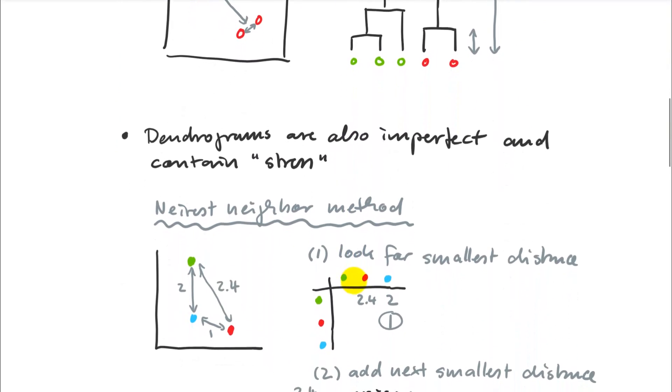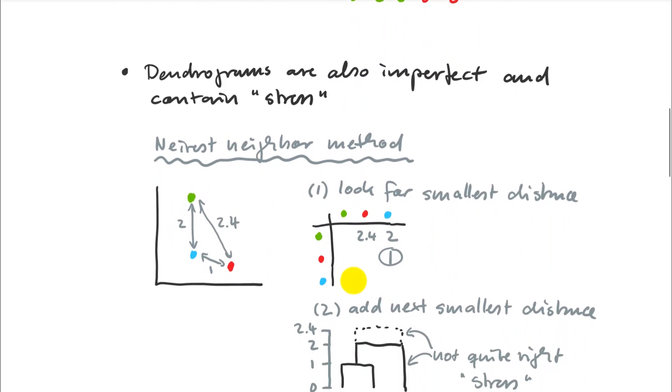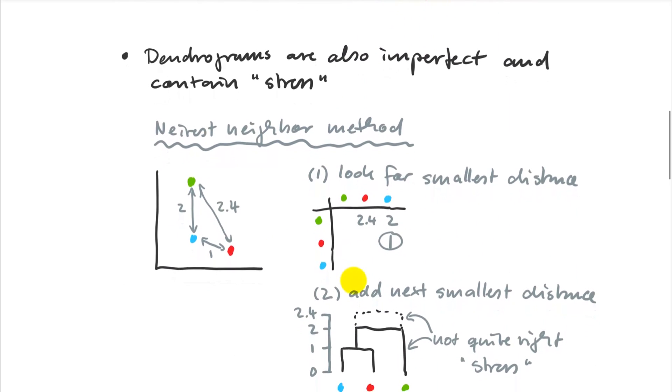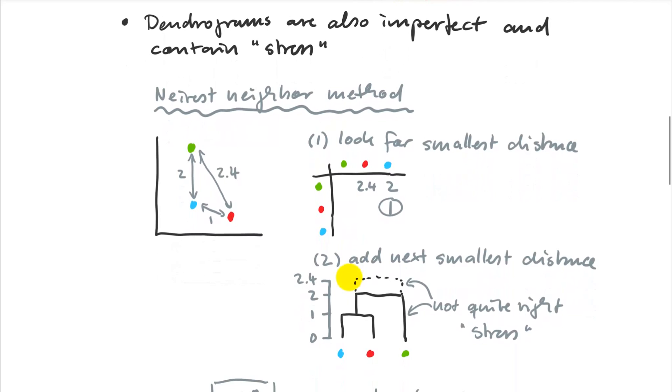Dendrograms are just like ordinations, they are imperfect representations of distances and they also have stress in them. I can illustrate this quite nicely with one of the clustering methods called nearest neighbor. If you start with your distance matrix that looks like this, these are my observations and then I calculate my distances, which could be Bray-Curtis, Euclidean, Mahalanobis, whatever you pick.